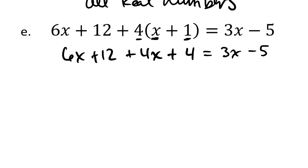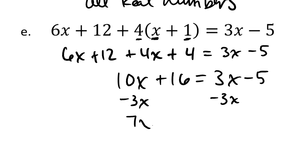If I simplify the left-hand side, you can see there's a total of 10x and then plus 16. And that equals 3x minus 5. So if I take away 3x from each side of this equation, I have equal things. I'm subtracting equal things. I get equal things.